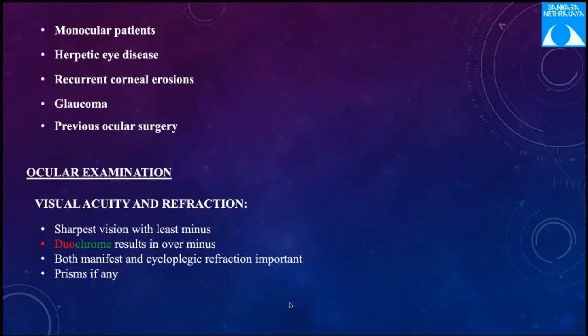Because of the risk of reactivation of herpetic eye disease, laser vision correction is contraindicated. A history of recurrent corneal erosions should be asked. History of glaucoma is important because during laser vision correction the IOP is increased to a very high level, which can further cause damage, and post-op steroids can also cause an increase in IOP in steroid responders. History of previous ocular surgery is very important.